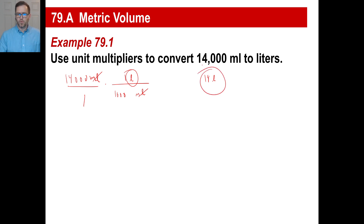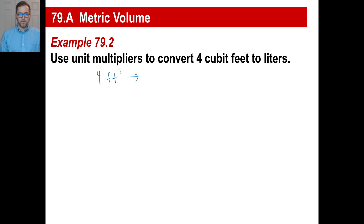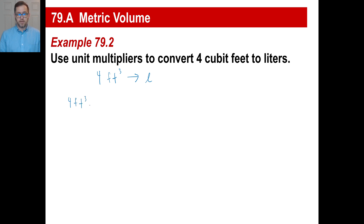Let's do one that's slightly more involved. Copy this down. Convert four cubic feet to liters — that's probably an easier way for you to write that. Same first step: write what you're given, four cubic feet. Since there is a foot times a foot times a foot, we know we're going to have to have three fractions — a foot, a foot, and a foot on the bottom. We know we're going to have three instances of feet at the bottom.